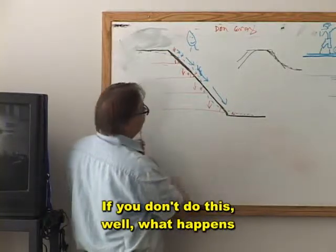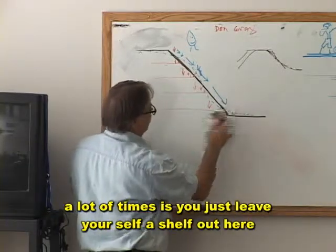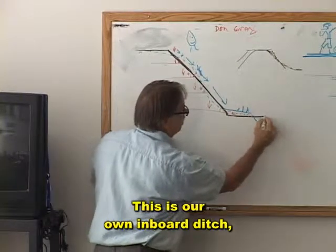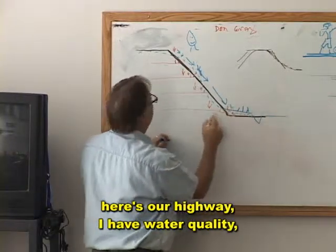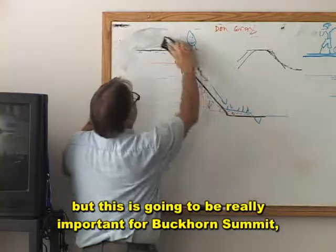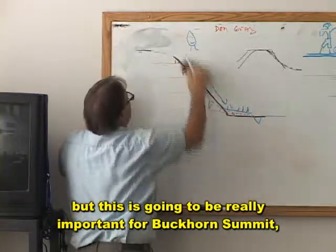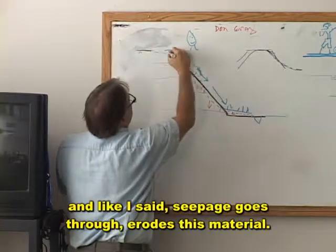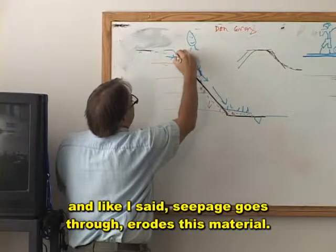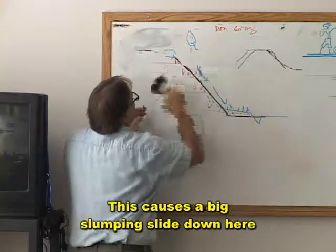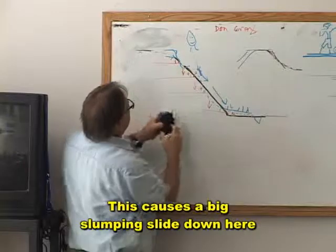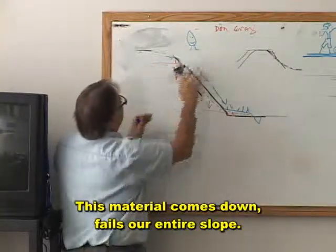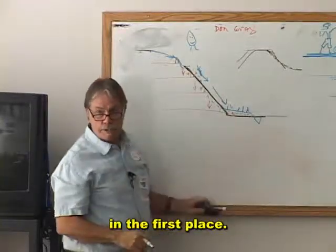If you don't do this, what happens a lot of times is you just leave yourself a shelf out here that can vegetate — that would be good. This is our home inboard ditch; here's our highway. We have water quality considerations. But rounding the top of the slope is going to be really important for Buckhorn Summit, because this vertical slope comes up, seepage goes through and erodes the material. This causes a big slumping slide down here, and then that material comes down and fails our entire slope. You'd be much better off rounding the slope from the first place — this is how you do it.